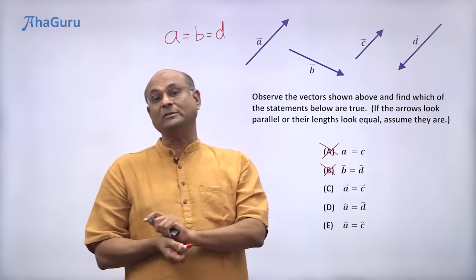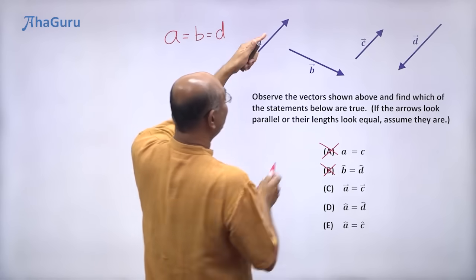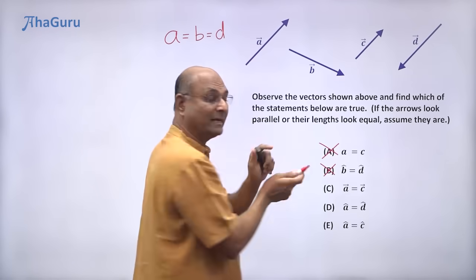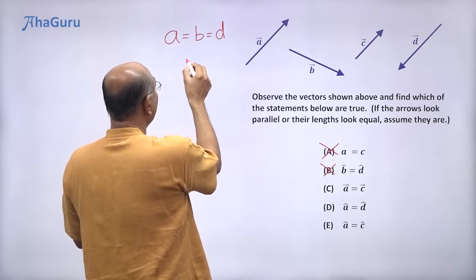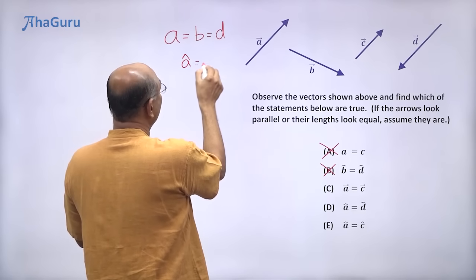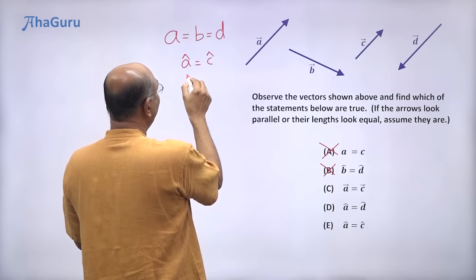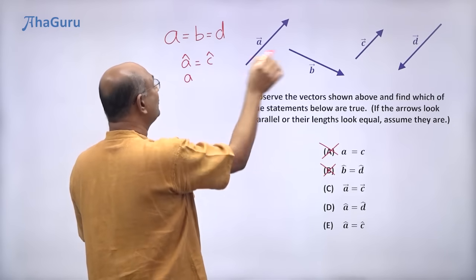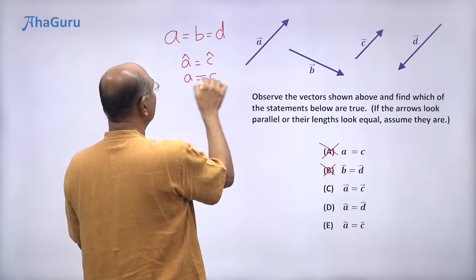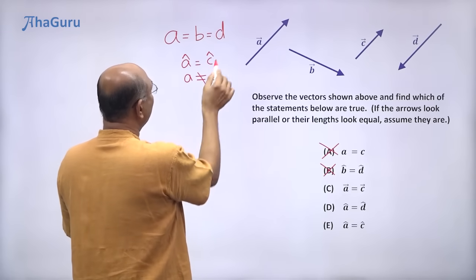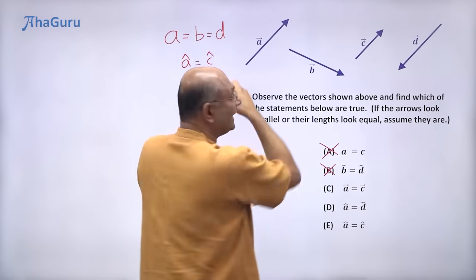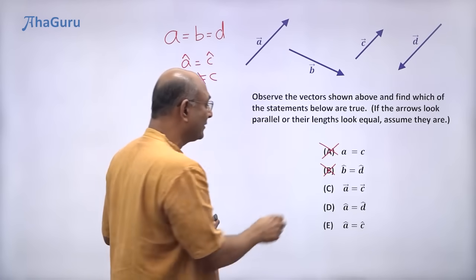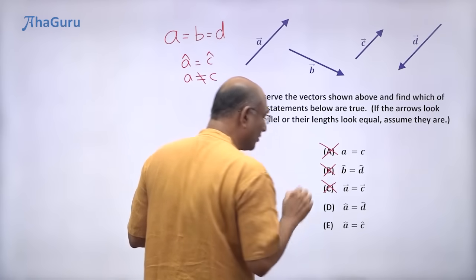A vector is equal to C vector. Well, they have the same direction, right? We can look at those two. A direction is equal to C direction, but A magnitude is not equal, right? This is not true. So that means A vector is not equal to C vector. They are not the same vector because they don't have the same magnitude. So this option is also wrong.